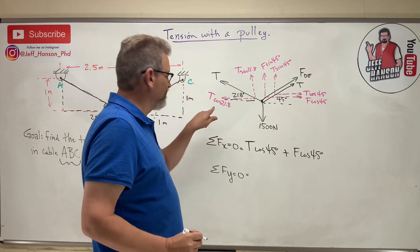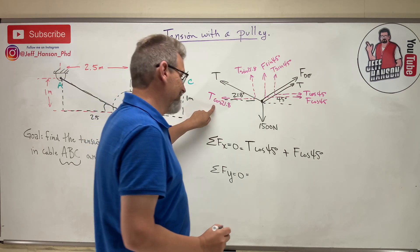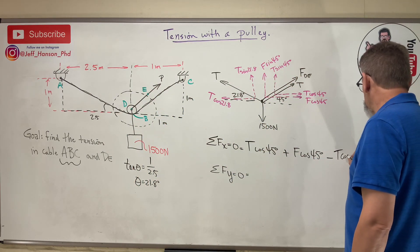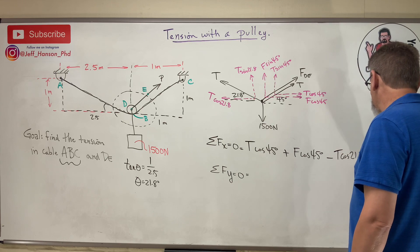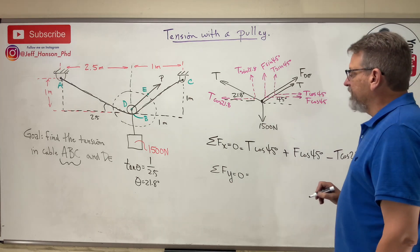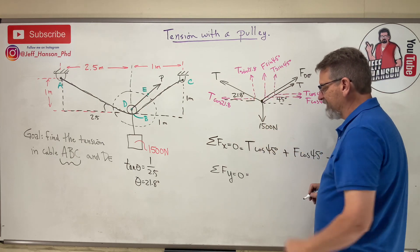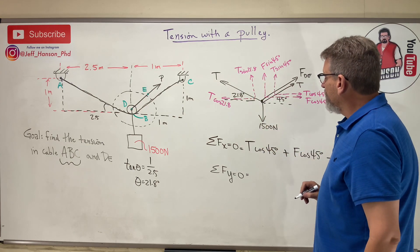Now I'm gonna do the y's. So I got three uphill guys - one, two, three - and I got one downhill guy, so he's gonna be negative. I'm trying to keep my order the same, so I'm gonna do this: